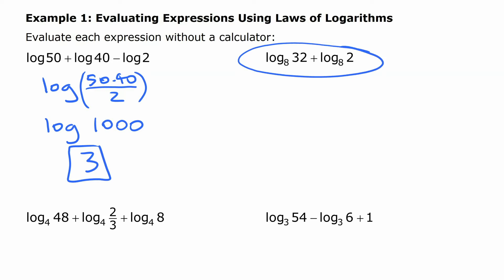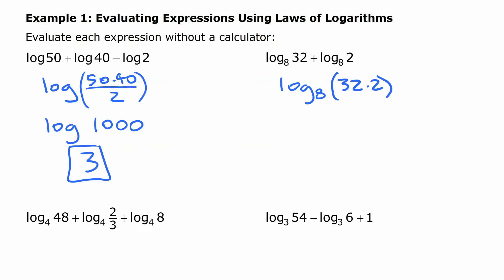The second expression is log base 8 of 32 plus log base 8 of 2. These aren't nice powers of 8, but since we're adding two logarithms we can combine them into a single logarithm of the product. 32 times 2 is 64, which gives us log base 8 of 64. And 64 is 8 squared, so this equals 2.